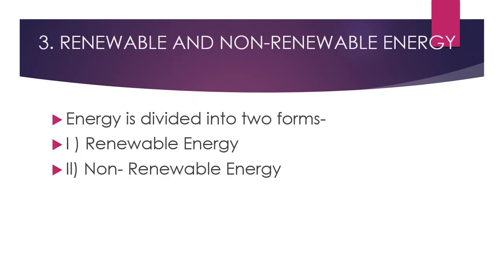Number three: renewable and non-renewable energy. Energy is divided into two forms. Number one: renewable energy. This energy can be used again and again. We get renewable energy from the sun, wind, and water. These are natural energy sources and can be replenished over a relatively short period of time. They provide us with energy for a long time.